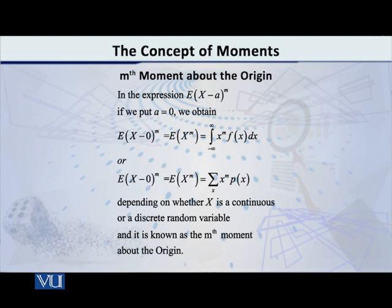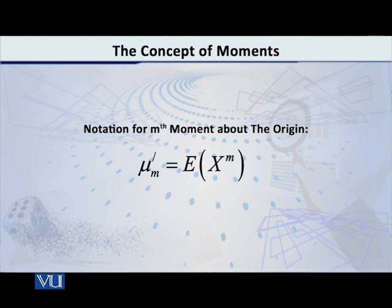For a continuous variable, the m-th moment about the origin equals the integral from minus infinity to infinity of x raised to m into f of x. For a discrete variable, it is the sum of x raised to m into p of x, over all x values. The notation used here is the same dash notation: mu-m prime is equal to E of x raised to m.